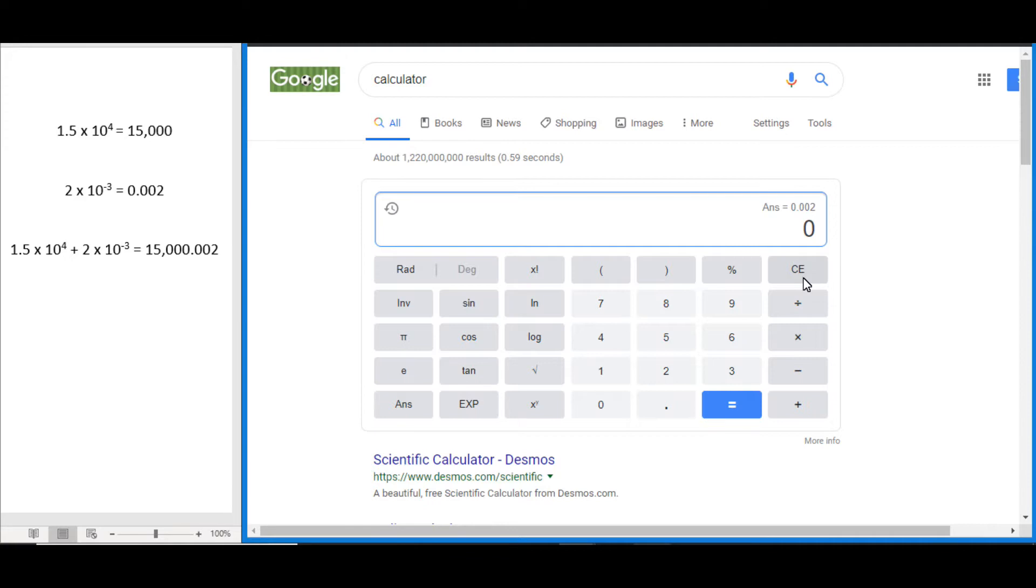Let's say we're given this formula. We can go 1.5 E 4, that's what we had, plus 2 E negative 3. There we go, and we see this adds up both those numbers to give us 15,000.002.